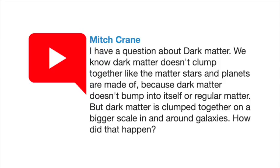A question from Mitch Crane — and I'm going to mispronounce all of these names, perhaps deliberately. He asks: I have a question about dark matter. We know dark matter doesn't clump together like the matter in stars and planets because dark matter doesn't bump into itself or into regular matter. But dark matter is clumped together on a bigger scale in and around galaxies — how did that happen? The answer is gravity, right? It's the only thing dark matter has to play with.